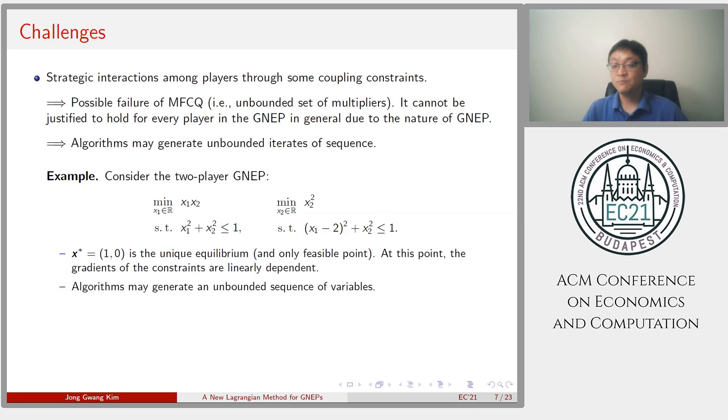This can be illustrated by a simple example. In this example, (1,0) is the unique equilibrium and the feasible point. At this point, the gradients of constraints are linearly dependent. So, the algorithm may generate unbounded sequence of variables.